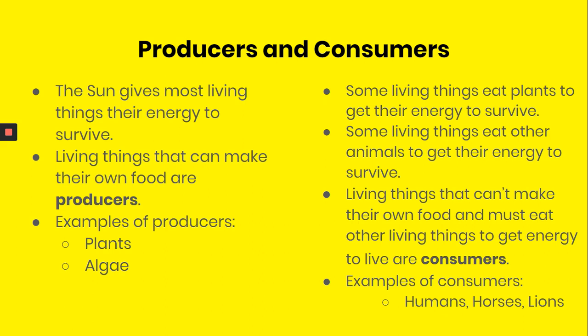In nature, there are producers and consumers. You know the sun gives most living things their energy to survive. Living things that can make their own food are called producers. Some examples of producers are plants, like trees, bushes, grass, and flowers — they're all producers.